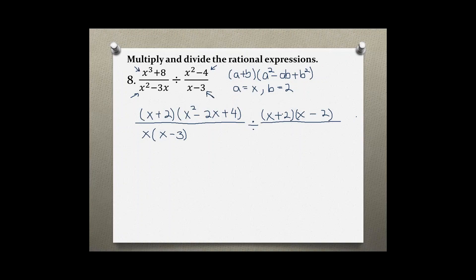Now, this one, there is nothing we can do, so we just bring it down. And now, because we are dealing with a division problem, we are going to apply the rule of keeping the first fraction as is, so x plus 2, and then x squared minus 2x plus 4, all over x, x minus 3. And then we are changing the sign to multiplication, and we are going to flip the second fraction, so now the x minus 3 is on top, and x plus 2x minus 2 is in the bottom.